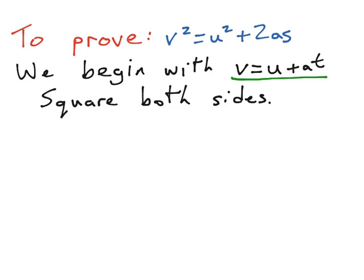Our first thing that we have to do in this proof is to square both sides of that equation. So what we'll end up with is v squared on the left hand side of the equal sign. When we squared the u plus at part of that equation,